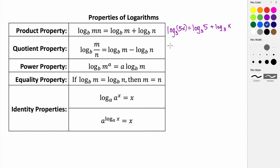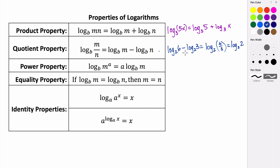This also works going backwards as well. So let's say you had log base 2 of 6 minus log base 2 of 3. You could put this into a quotient — log base 2 of 6 over 3 — and then reduce that. So you would end up with log base 2 of 2, and this is far easier to evaluate than the entire difference. And you could also express log base 2 of 2 as that difference, log base 2 of 6 minus log base 2 of 3.